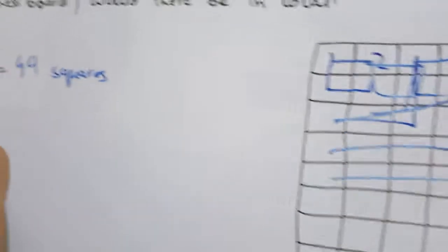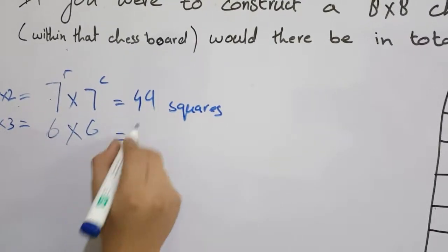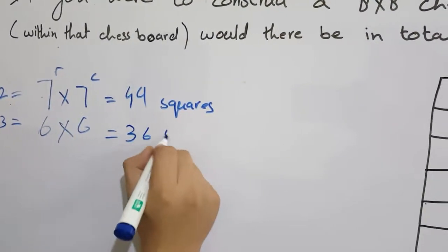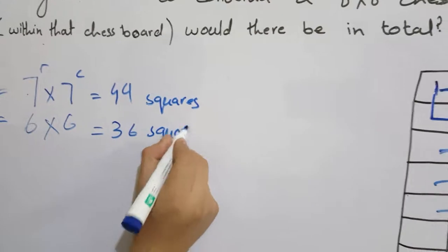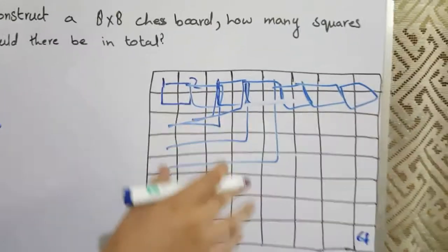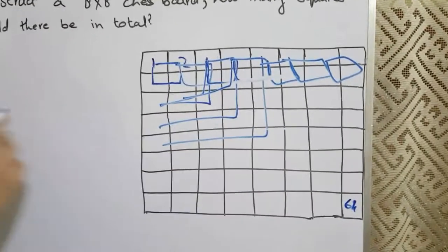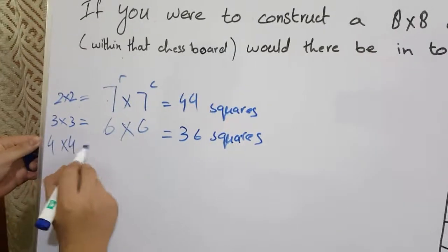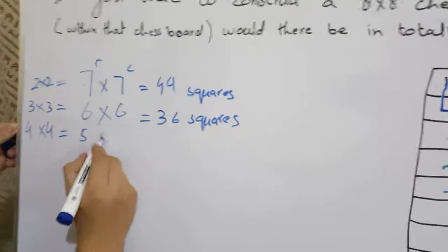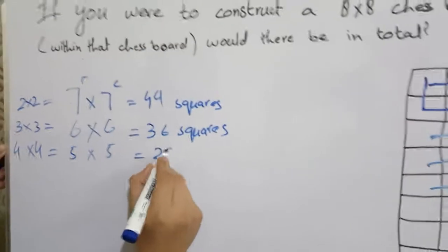So, you can see 6 in the row and 6 in the column. That will be 36 squares. If you go on so that, each time you go, the number of squares decreases. So, when you go 4x4, there will be 5 in the row and the 5 in the column, 25 squares.